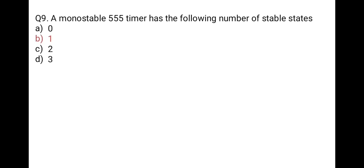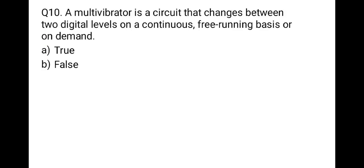The next question: a monostable 555 timer has how many stable states? Options: 0, 1, 2, or 3. Monostable means single shot — there is only one stable state, the other is unstable. Correct option is B, 1. Next question: a multivibrator is a circuit that changes between two digital levels on a continuous, free-running basis or on demand — true or false? Correct option is A, true, because a multivibrator is a square wave generator with only two states: 0 and 1.